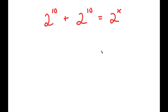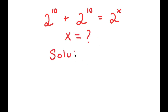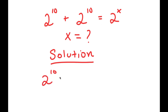In this problem, I have 2 to the power of 10 plus 2 to the power of 10 is equal to 2 to the power of x. I want to find the value of x.